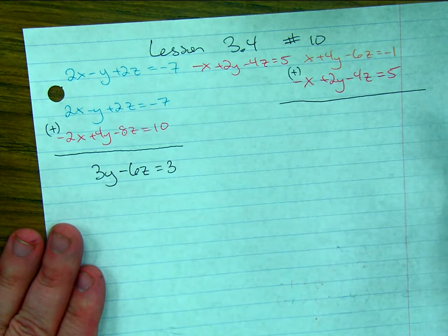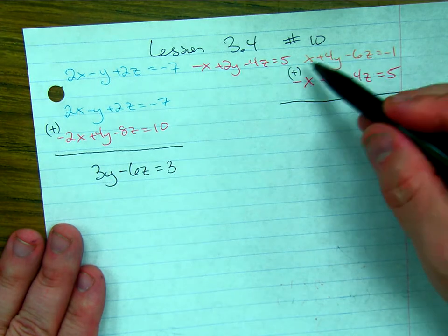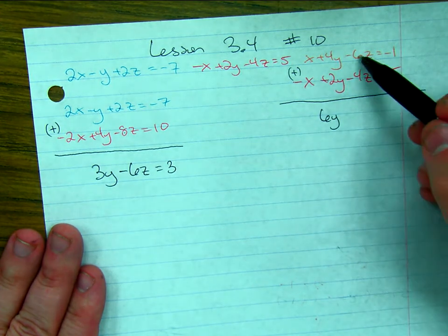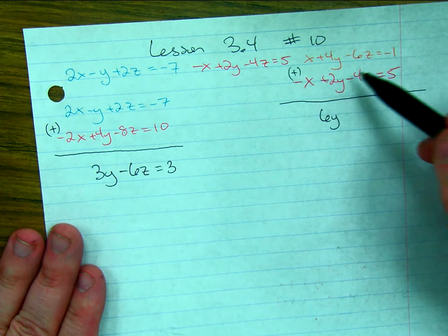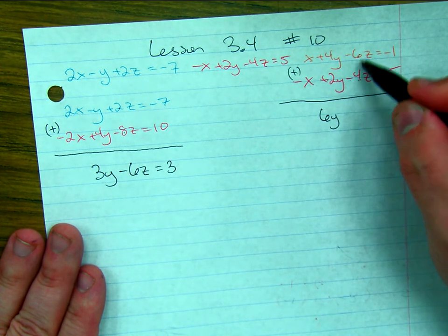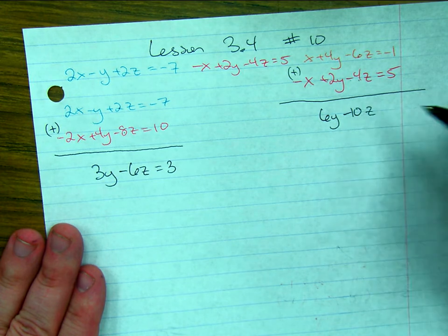x plus negative x, no more x's. 4y plus 2y, 6y. Negative 6 plus negative 4. In other words, I'm adding more negatives. I'm getting more negative. Negative 10z. And negative 1 plus 5 gets me up to 4.